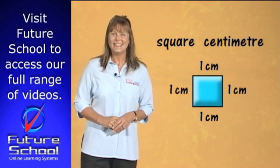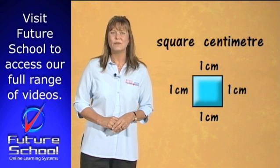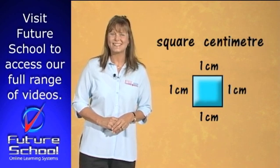A square centimetre looks like this. Each side of this square measures one centimetre, so it's a square centimetre.